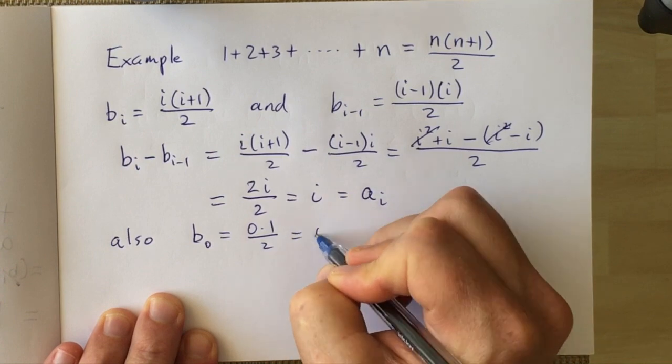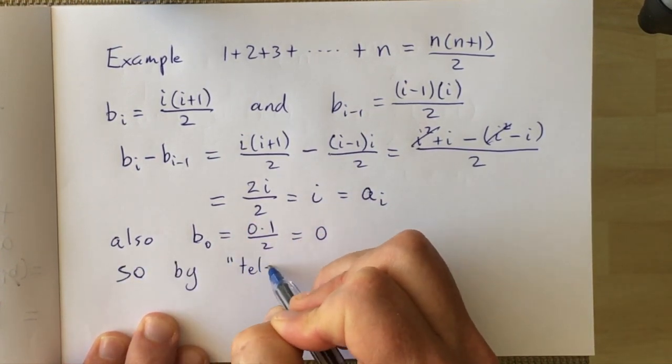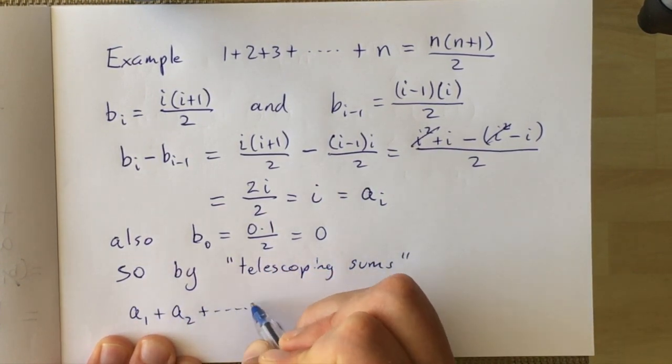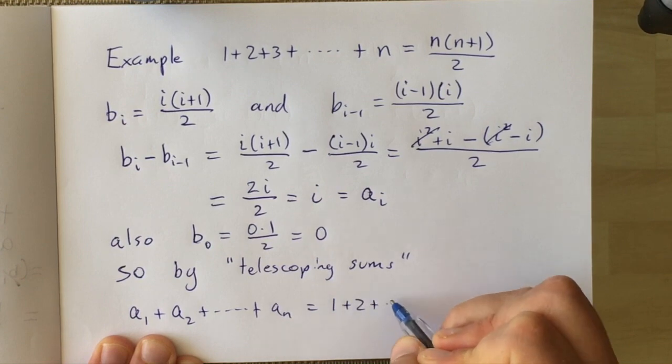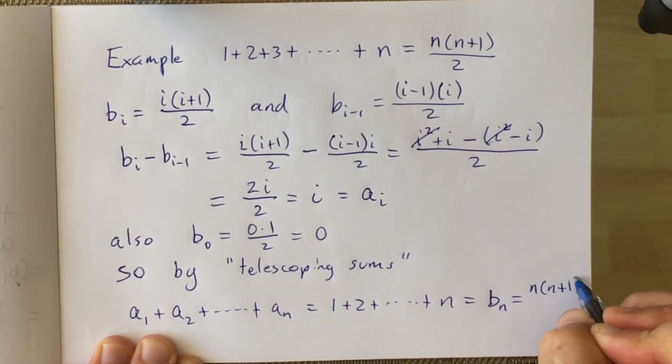So we just check that b0 is equal to 0. Then this proves by telescoping sums that the sum a1 plus a2 plus up to an is 1 plus 2 up to n, which is equal to bn.